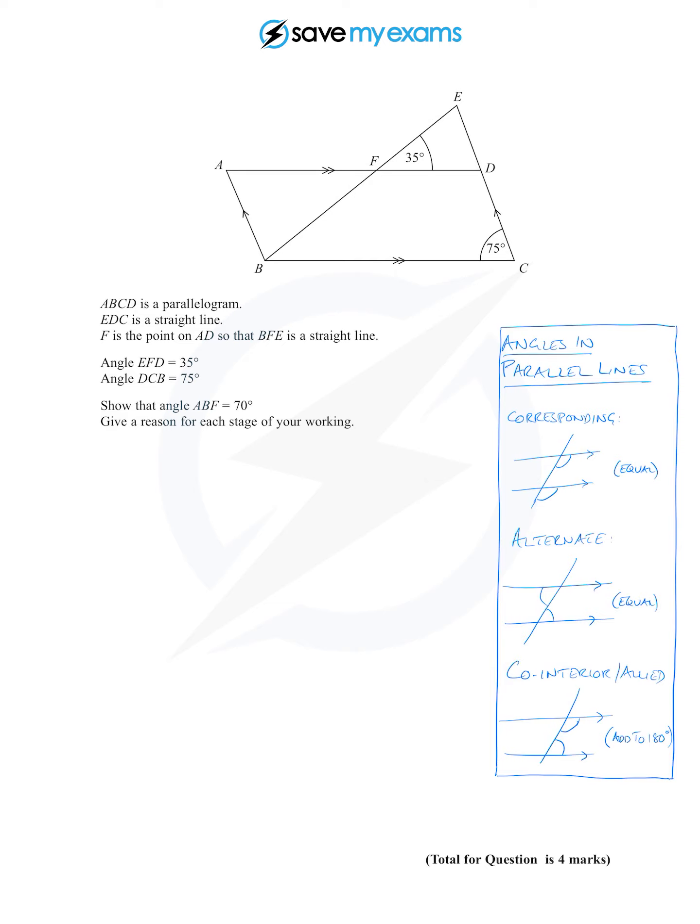Well, quite a good way to do these questions is just to do a bit of angle chasing and see what happens. The first thing that I see is that this 35 is corresponding to this angle here. Look, there's that shape which looks a bit like an upside down F.